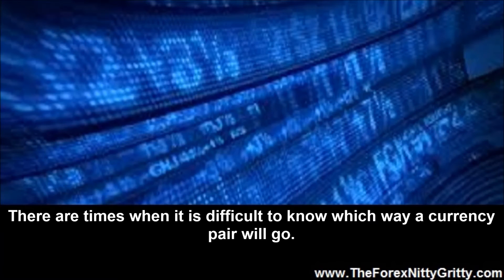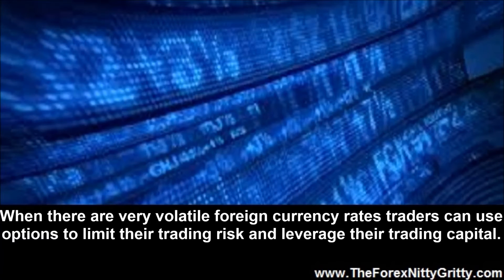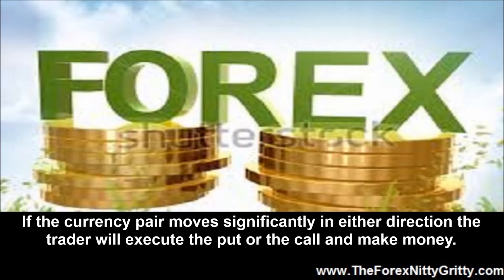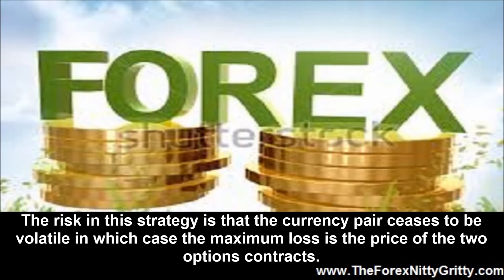Staking Out Positions in a Volatile Market. There are times when it is difficult to know which way a currency pair will go. When there are very volatile foreign currency rates, traders can use options to limit their trading risk and leverage their trading capital. A basic and fairly common strategy is called a long straddle. A trader buys both a put and a call on one currency with the other. If the currency pair moves significantly in either direction, the trader will execute the put or the call and make money. The risk in this strategy is that the currency pair ceases to be volatile, in which case the maximum loss is the price of the two options contracts.